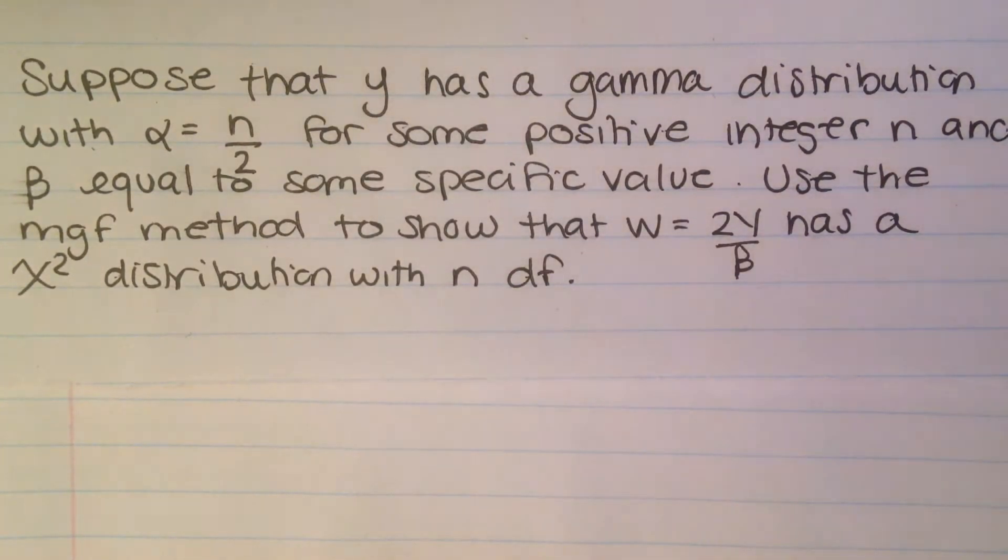So first one that's given here, it says suppose that y has a gamma distribution with alpha equals n over 2 for some positive integer n and beta equal to some specific value. Use the moment generating function, I'm just going to call it MGF method, to show that w equals 2y over beta has a chi-square distribution with n degrees of freedom.